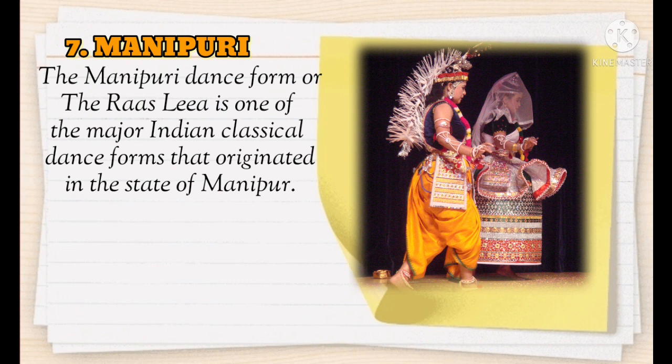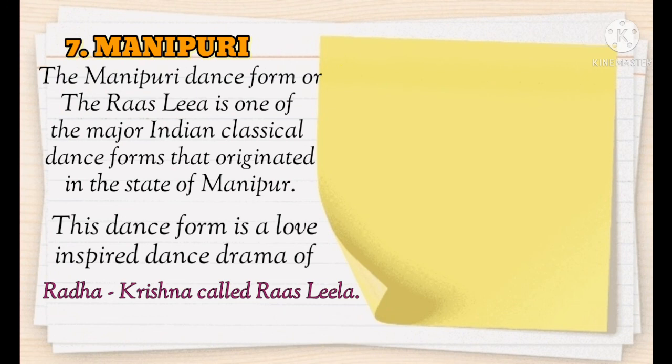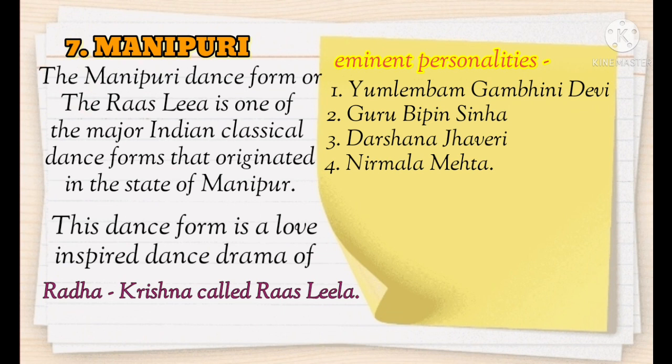Number seven is Manipuri. The Manipuri dance form, also called Ras Leela, is one of the major Indian classical dance forms that originated in the state of Manipur. It is a love-inspired dance drama of Radha and Krishna, called Ras Leela.